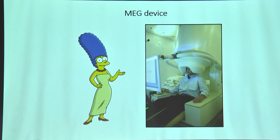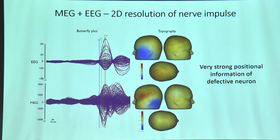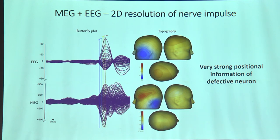The device looks something like this — still UFO-like but a better hat. The advantage is analogous to 2D gel electrophoresis: with electrophoresis you separate proteins by molecular weight, but adding isoelectric point differentiation gives much better resolution. Similarly, combining MEG and EEG gives you a butterfly plot where you can pin down the electromagnetic flux to a single neuron.